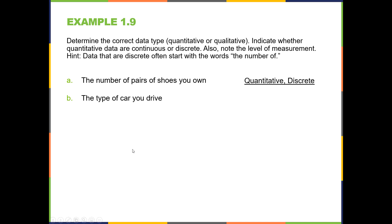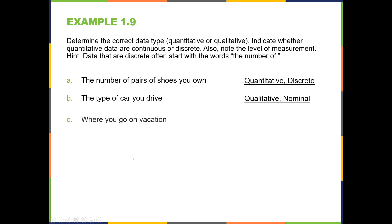The type of car you drive. This is not a quantity — you're asking what type of car do you drive, and the answers would be types of cars that are words. There's no way to put them in any kind of natural order, so this would be qualitative, nominal. Where you go on vacation is similar — the answers are words with no ordinal meaning, so that would again be qualitative, nominal.